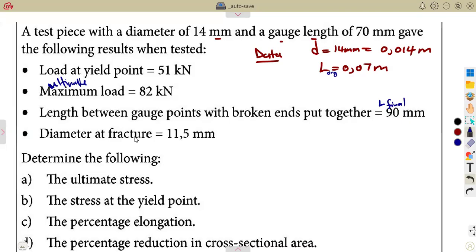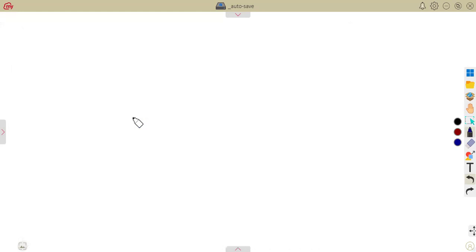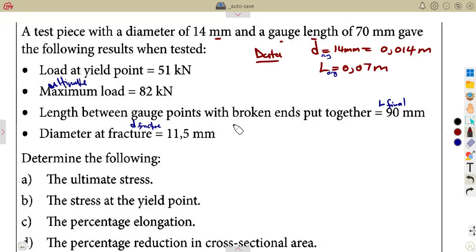The diameter at fracture. This is your original diameter, the one that you started with. There's another diameter at the fracture. Remember, at the fracture, that is at the end point where we do not have any move. There's nothing there. That is our end point. Remember, we talked about that in the presentation of the graph. So from there, they gave, determine the following, the ultimate stress.